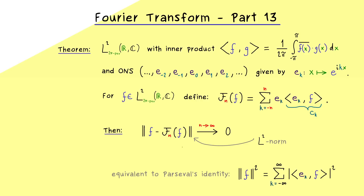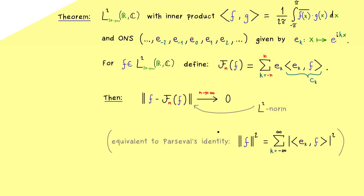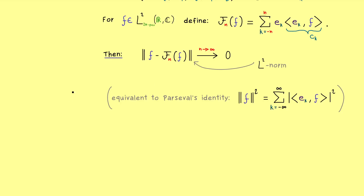Parseval's identity is important because it tells us that the norm squared can be calculated by using the Fourier coefficients. If you recall the last video, we have already shown Parseval's identity for some functions in L2. Therefore the goal of this video is to extend this to all functions in L2. To be honest, this is not so simple, so we first have to do some preparation before we can start with the actual proof.